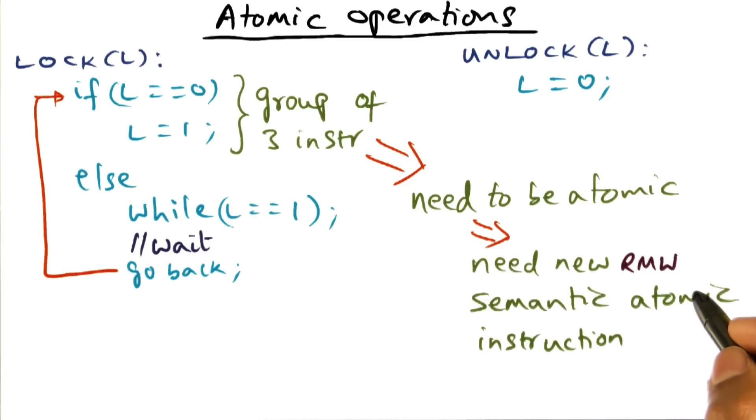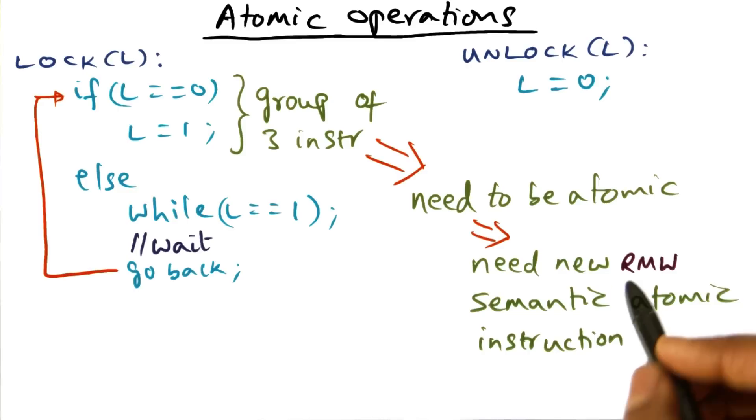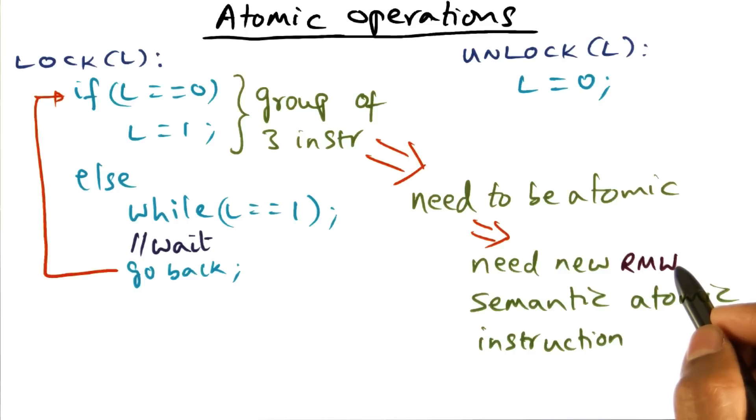And we need a new semantic for an atomic instruction, and this semantic is what I call the read, modify, write operation. Meaning that I'm going to read from memory, modify that value, and write it back to memory. So that's the kind of instruction that is needed in order to ensure that we can implement a lock algorithm.